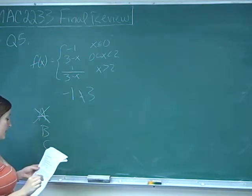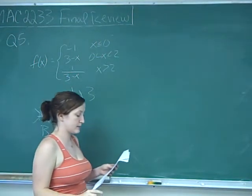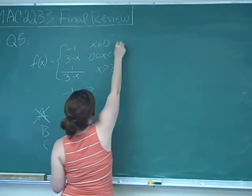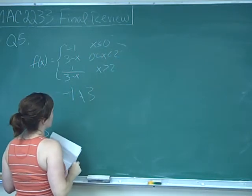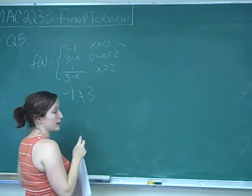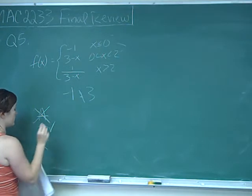Statement B says f(x) has non-removable discontinuities at x equals 0 and x equals 3. At x equals 0, this is a jump discontinuity. At x equals 3, we have a vertical asymptote, which is also a non-removable discontinuity. So B is true.